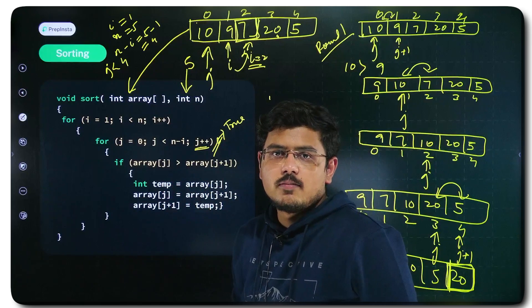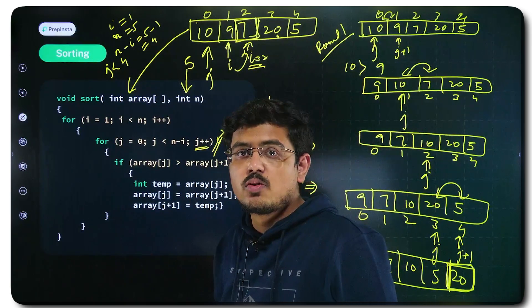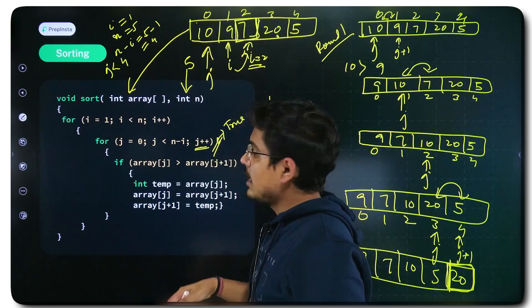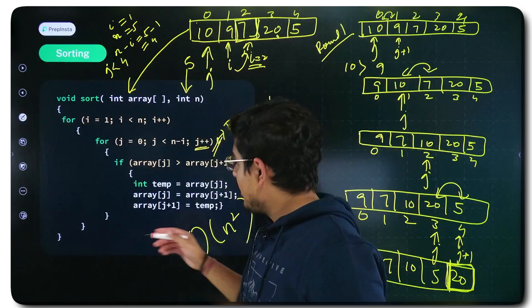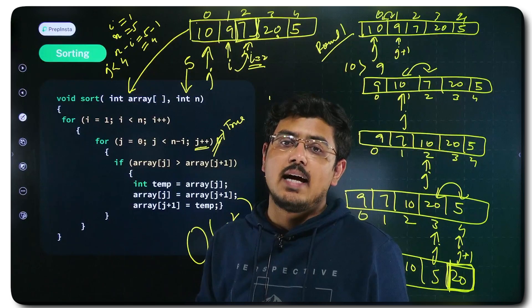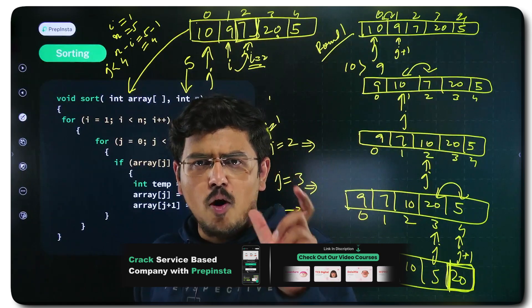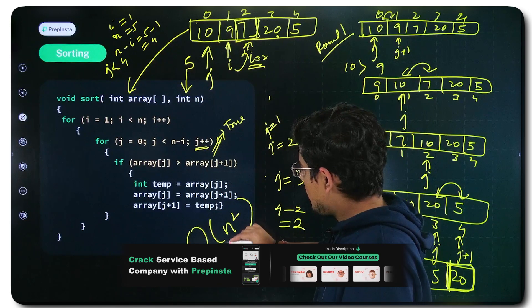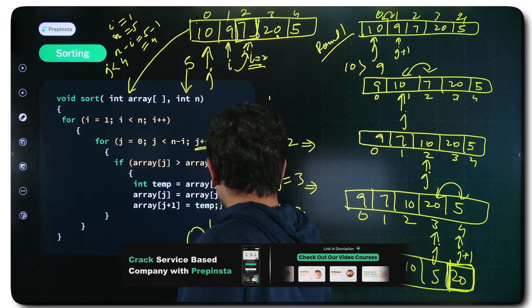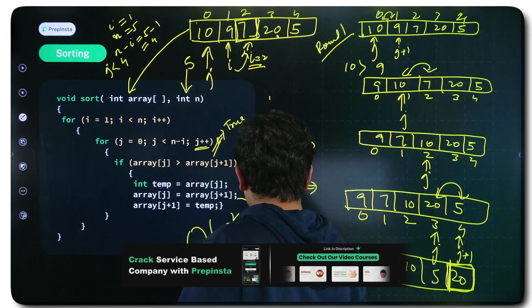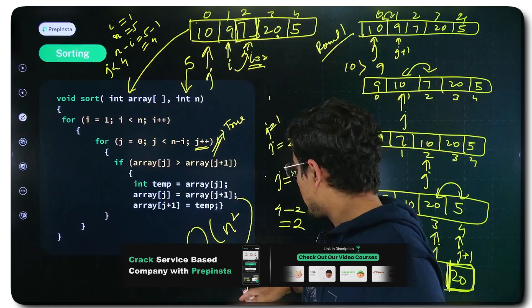However, this is not a very good approach. This approach has two nested loops, and if you have watched the time complexity videos, you would understand that this has O(n²) time complexity. This is never considered a good time complexity. In the next part I will teach you how to optimize this algorithm — a very small step will bring the time complexity down to O(n).